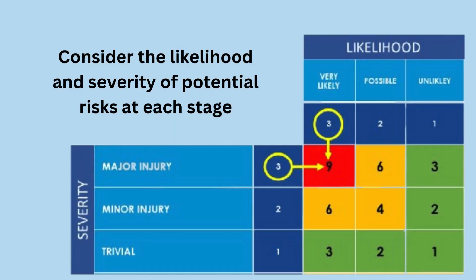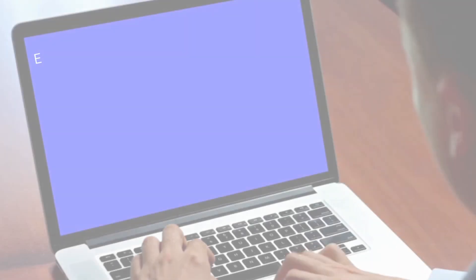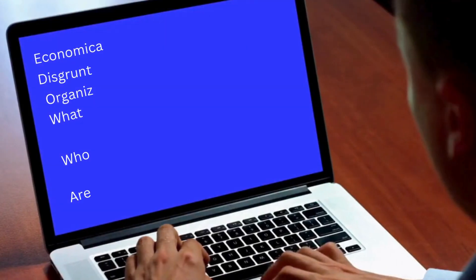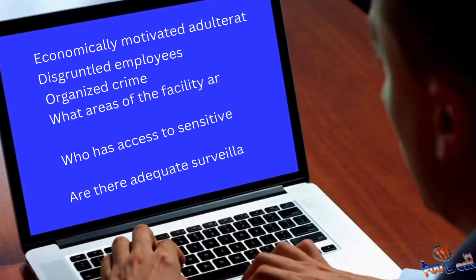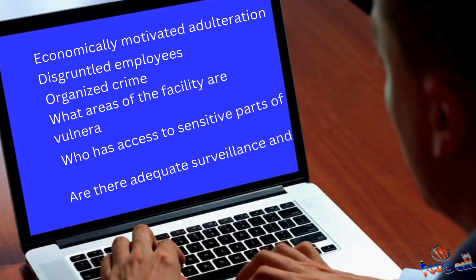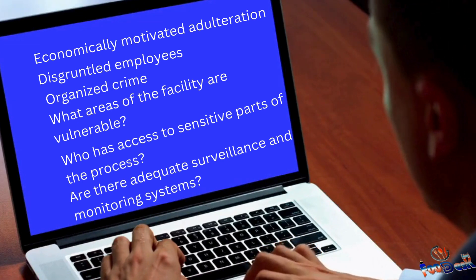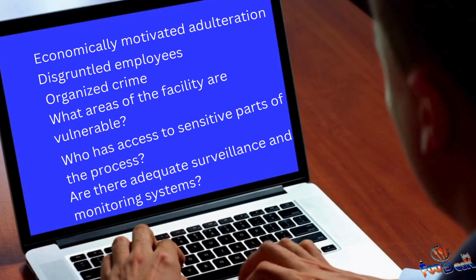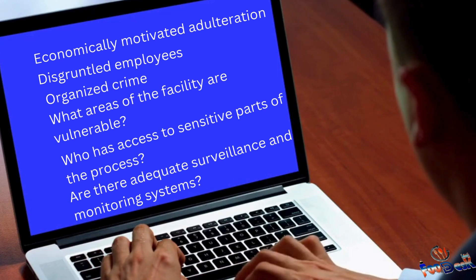For each stage, you should consider the likelihood and severity of potential risks. One of the first steps is understanding the motivations and opportunities that could lead to intentional contamination. In recent years, economically motivated adulteration, disgruntled employees, and even organized crime have posed threats to food safety.